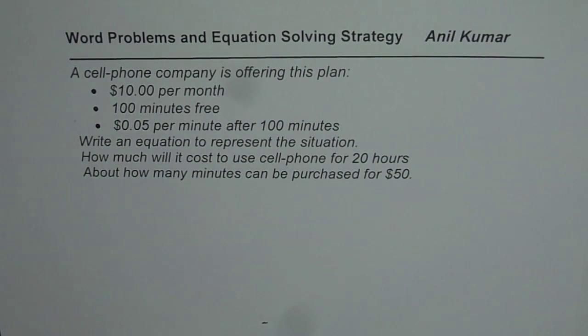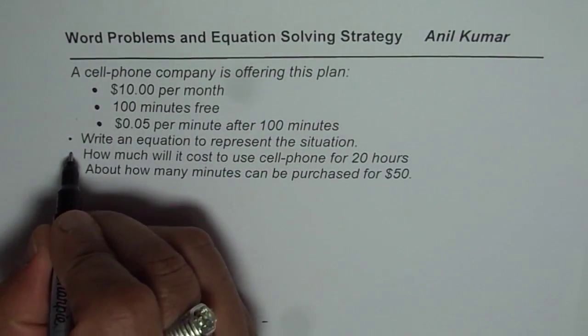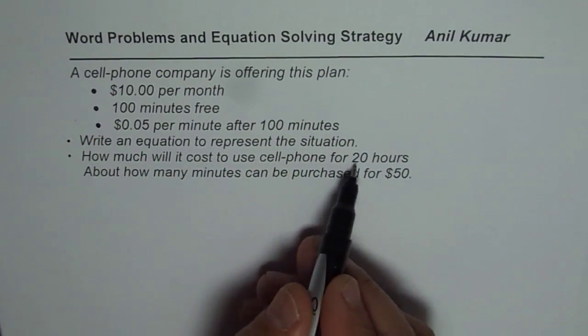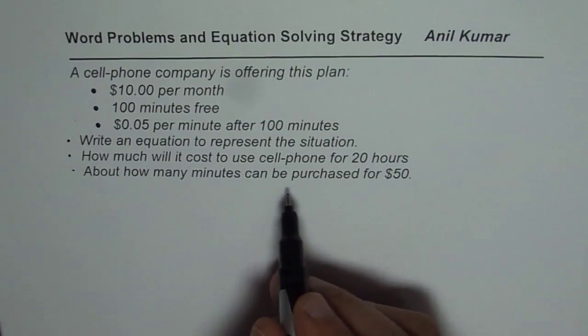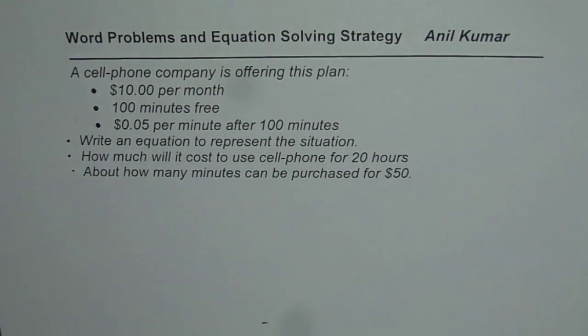What we need to do here is three things. First, write an equation to represent the situation, then how much will it cost to use cell phone for 20 hours, and lastly, about how many minutes can be purchased for $50. You can pause the video, answer the question and then look into my suggestion.